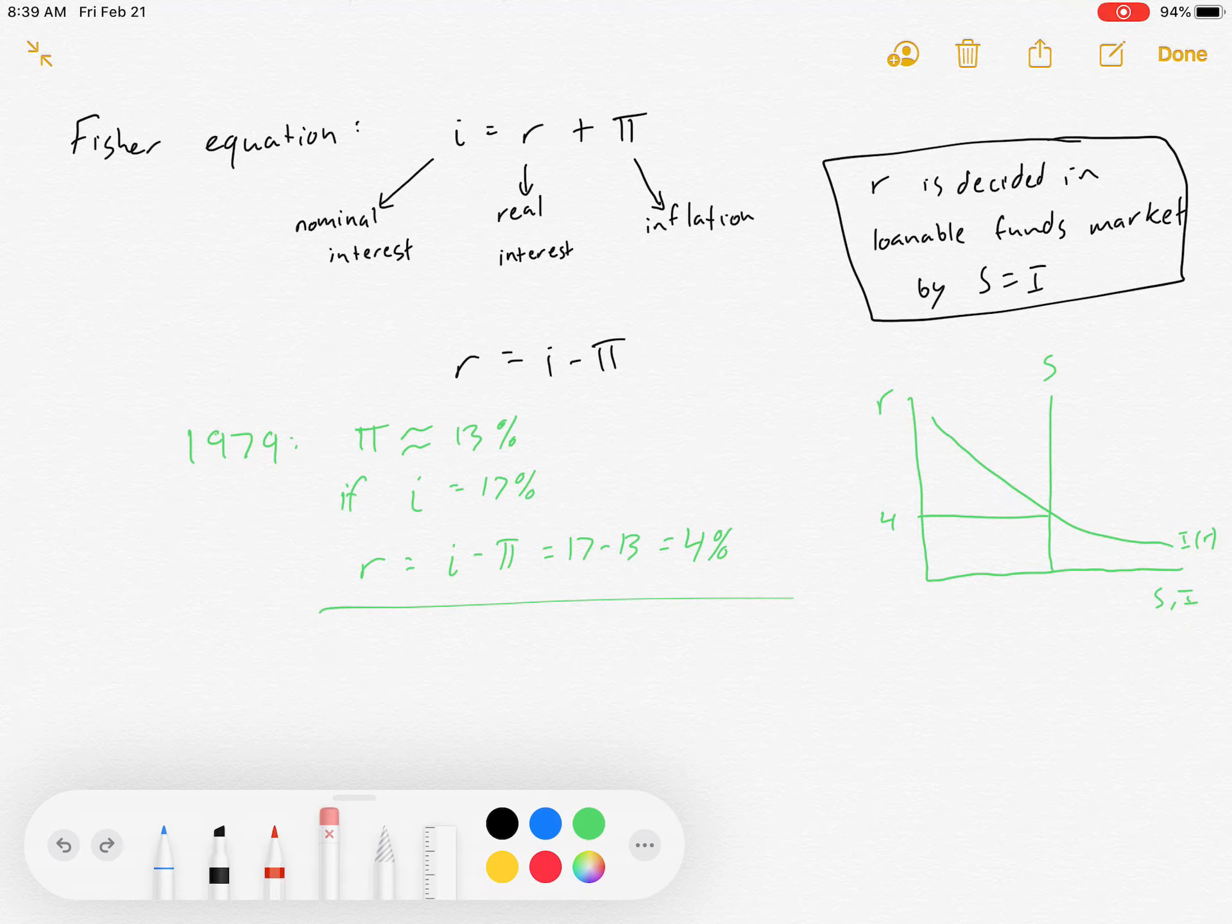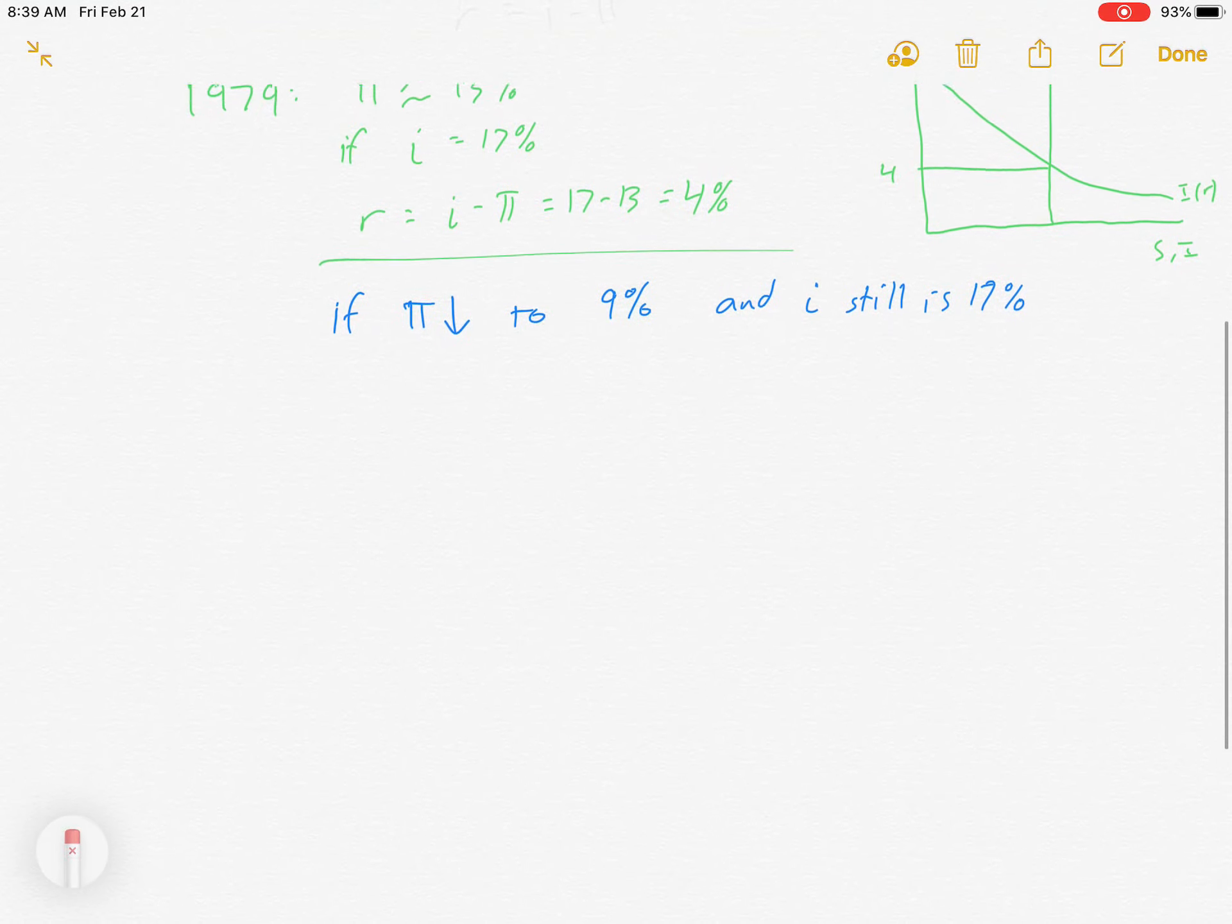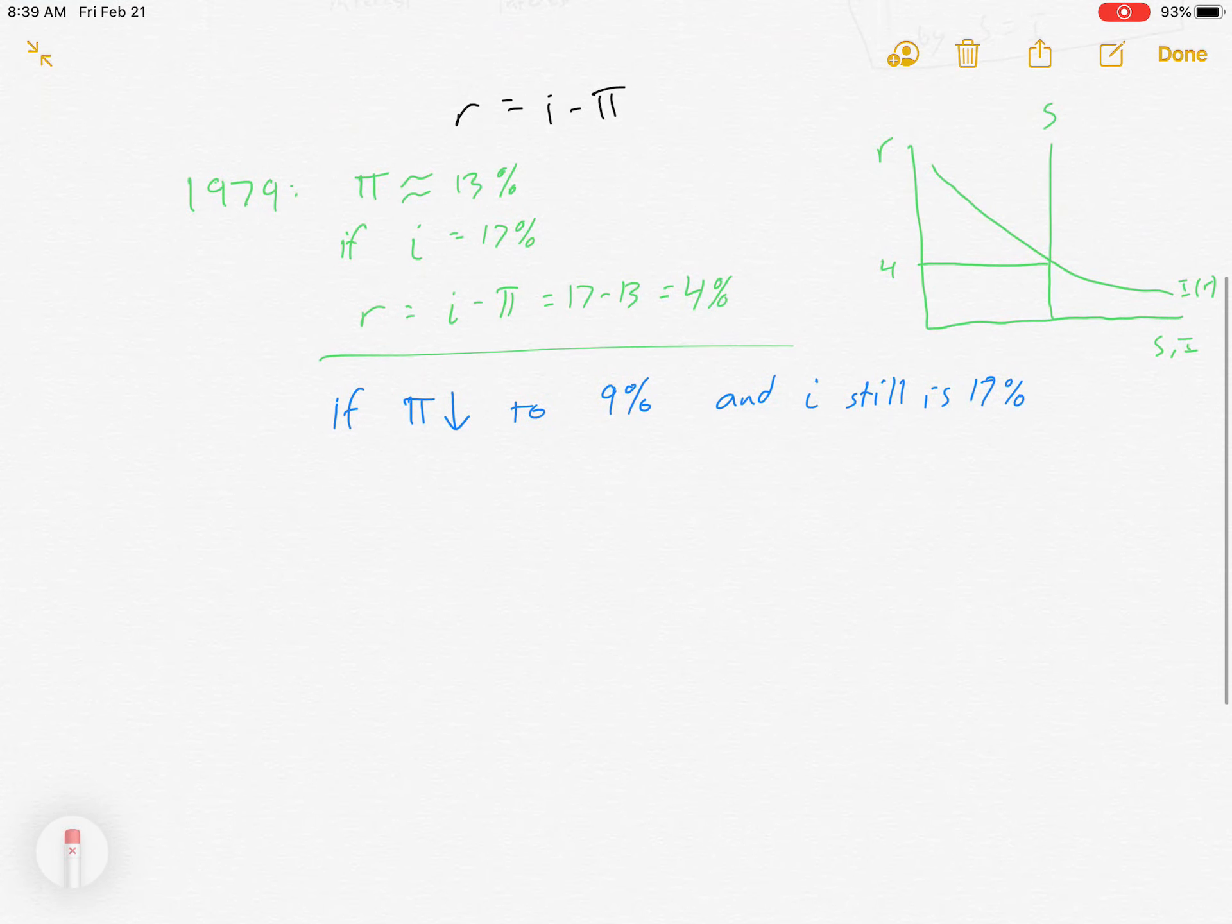Not lending and savings, lending and borrowing. So what happens now if we change it? What if inflation falls to 9% and the nominal interest rates don't adjust right away?